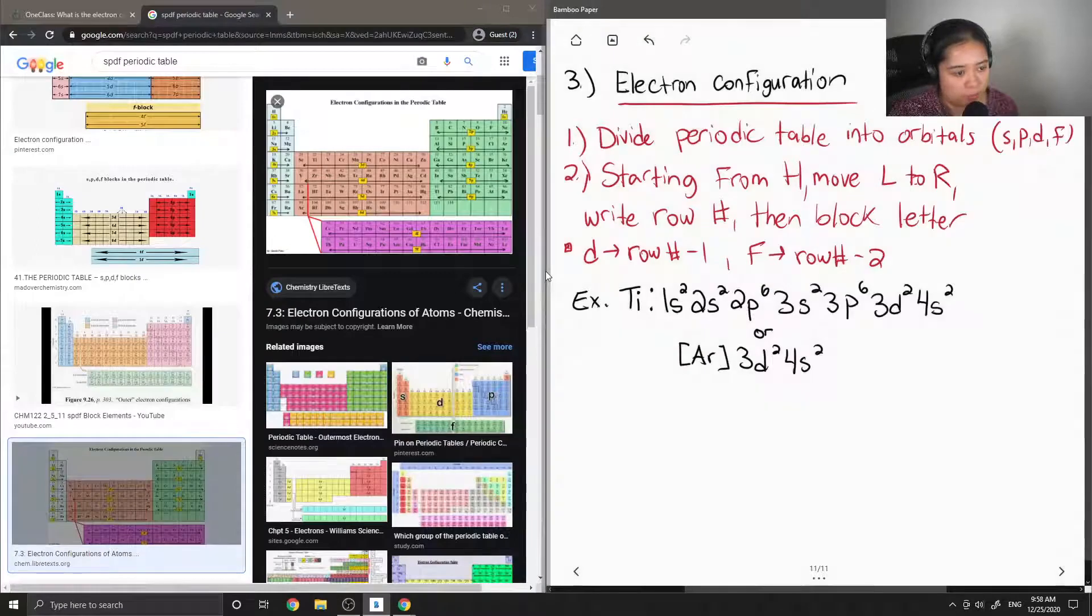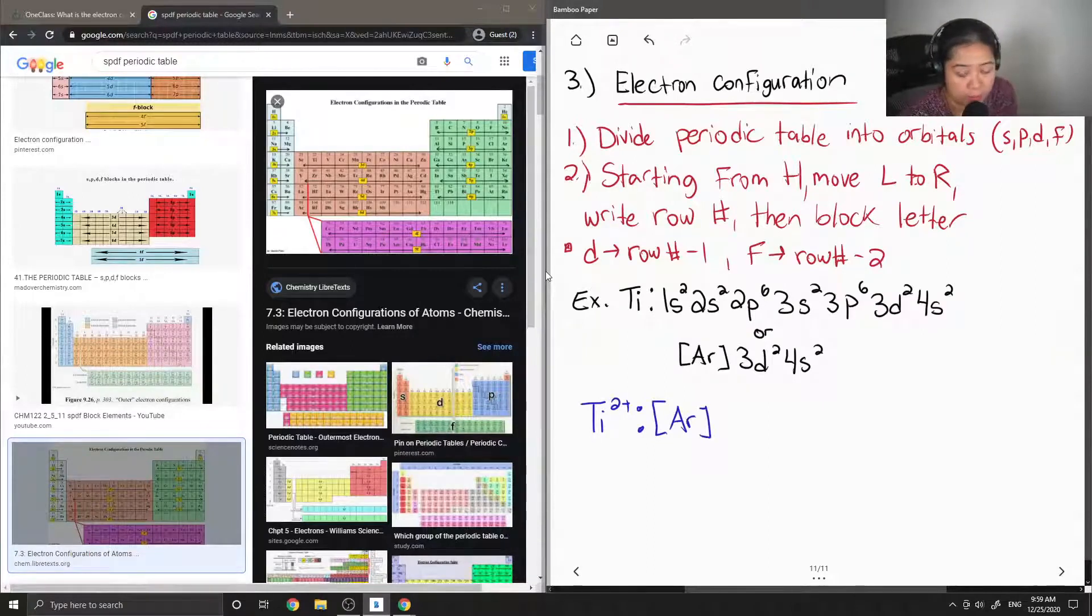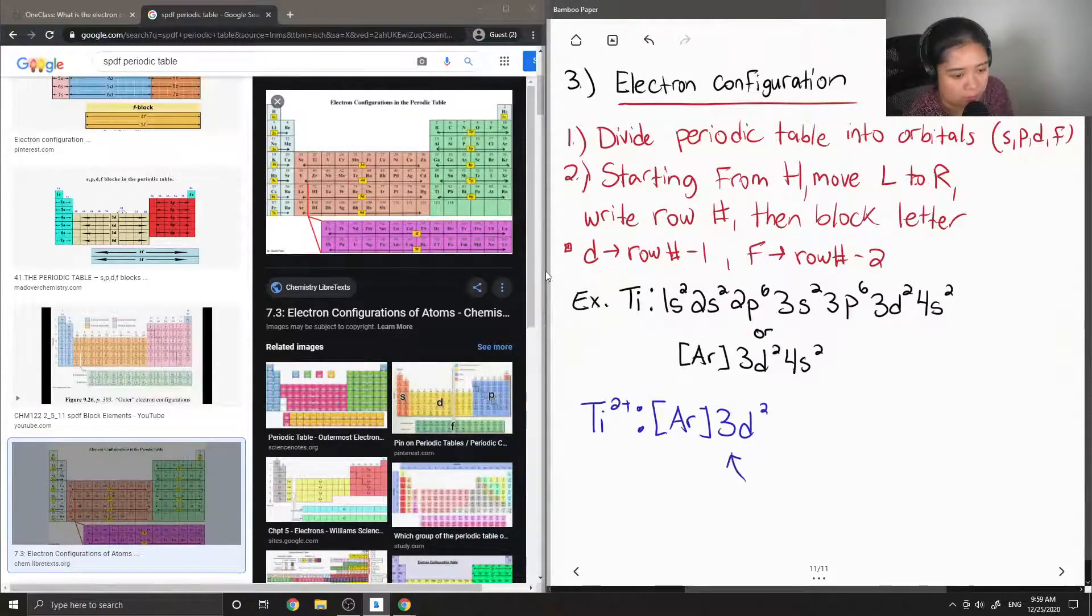Okay, so now for the question, we want to look at titanium when it has two electrons removed. So basically when two electrons are removed, we're going to take the two electrons from the s orbital. So it becomes argon 3d2. So this is because partially filled, or I'll just say the filled d orbitals, are more stable.